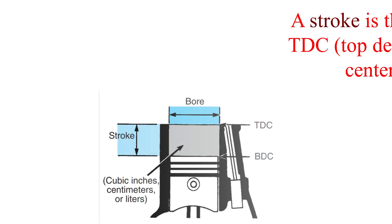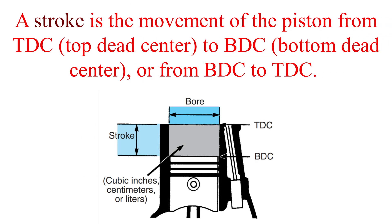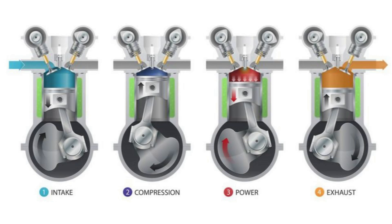A stroke is the movement of the piston from TDC to BDC. There are four strokes in one four-stroke cycle of the engine. They are called the intake stroke, compression stroke, power stroke, and exhaust stroke.